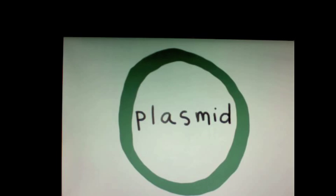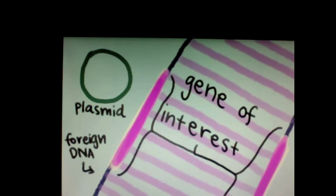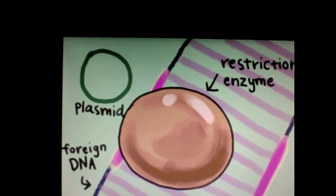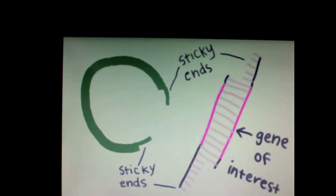Cohen and Boyer created the first transgenic bacterium by using plasmids. First, they isolated a plasmid from a bacterium and DNA from another cell containing the gene of interest. Using restriction enzymes, the DNA and plasmid are cut with the same restriction enzyme. In nature, restriction enzymes occur in bacteria and work to cut up the DNA of invading viruses. The cut made by the restriction enzyme creates sticky ends, which can hydrogen bond with complementary sticky ends on another DNA molecule.